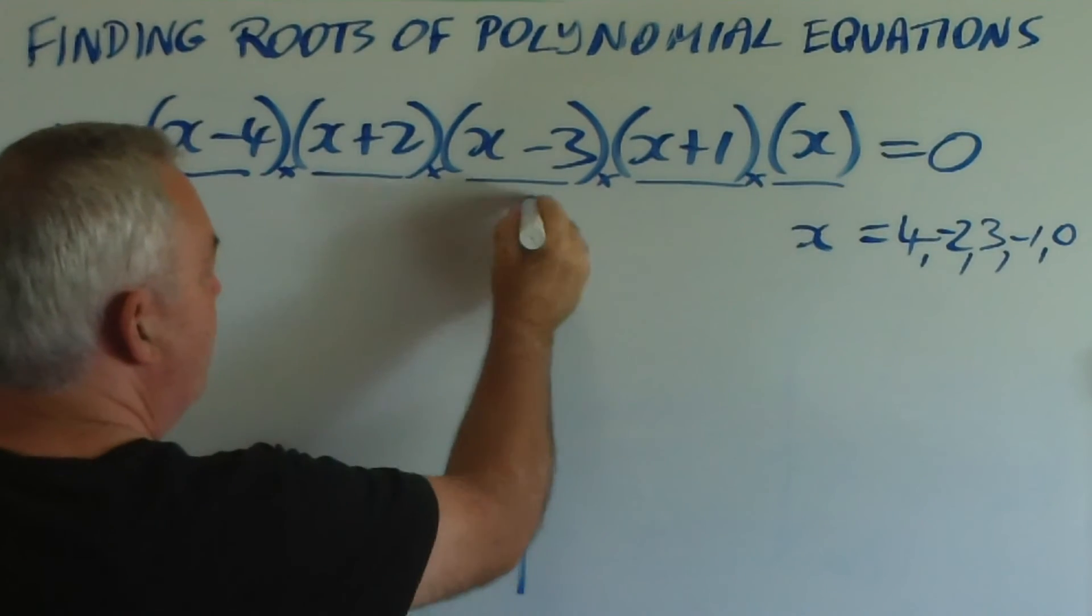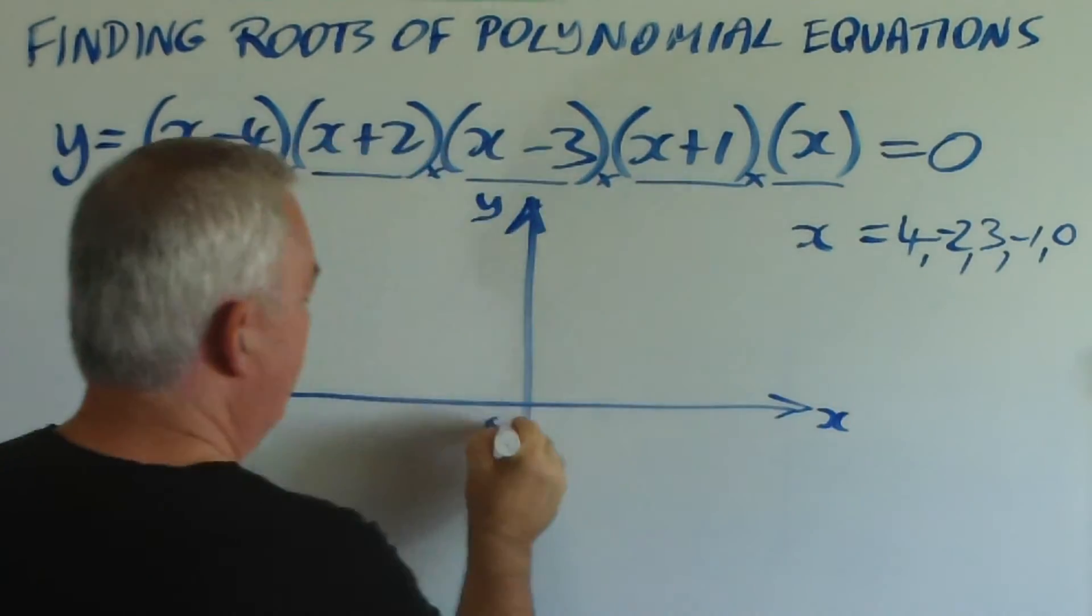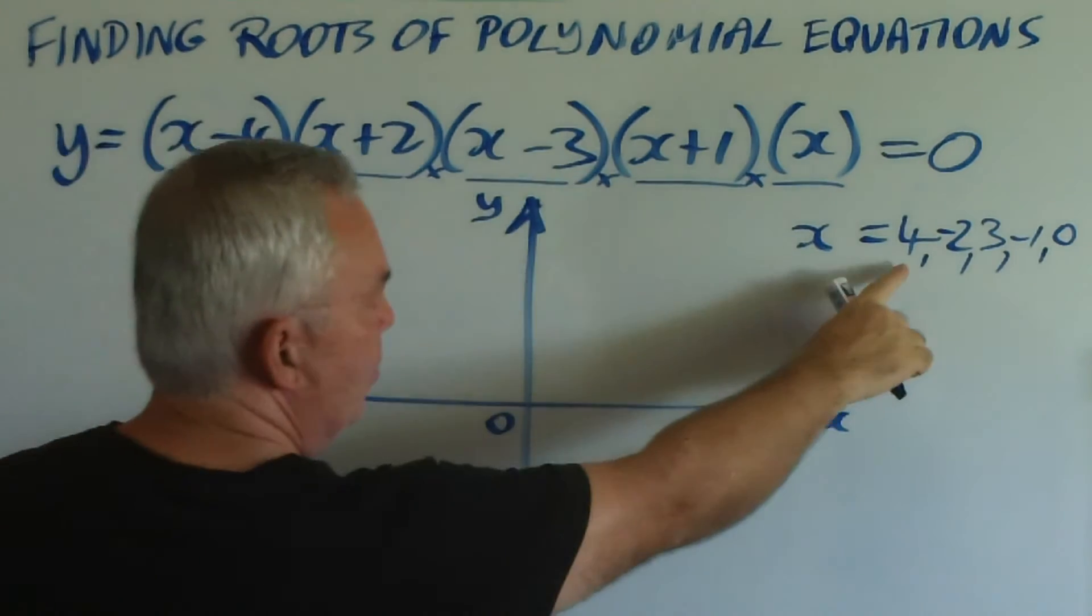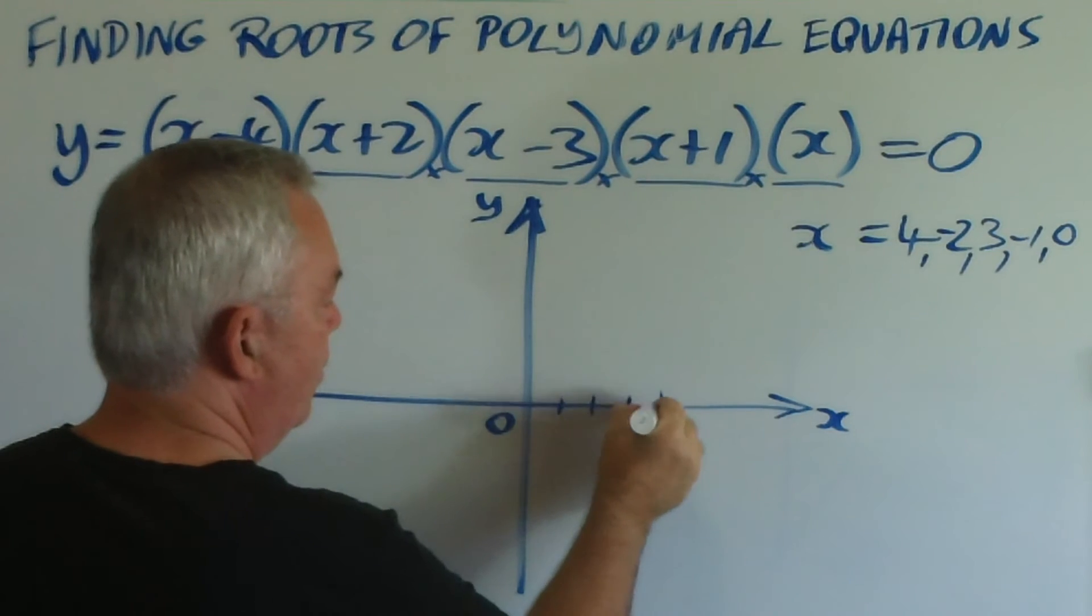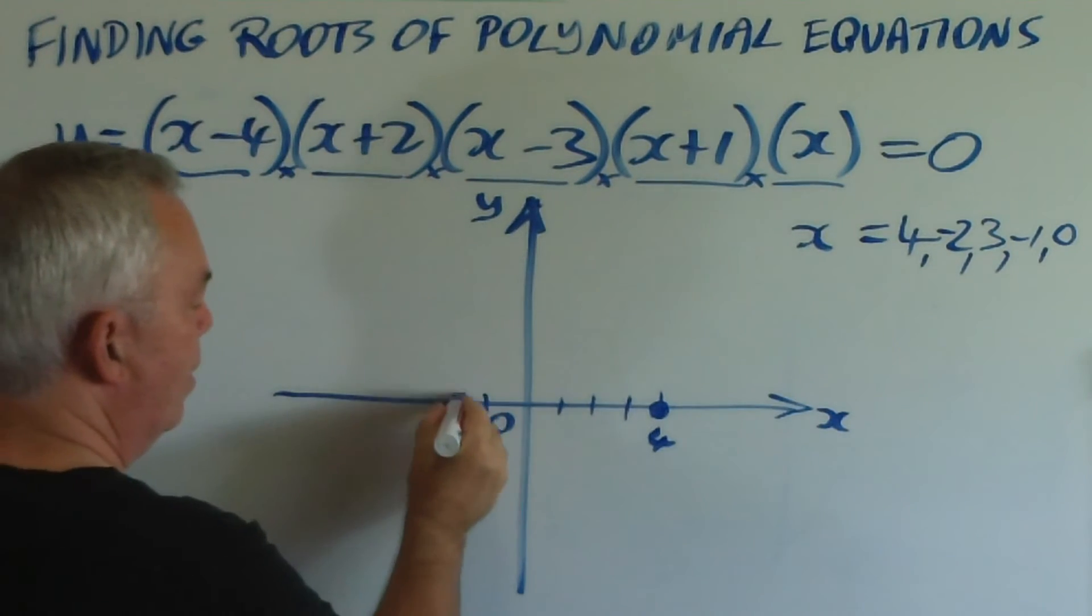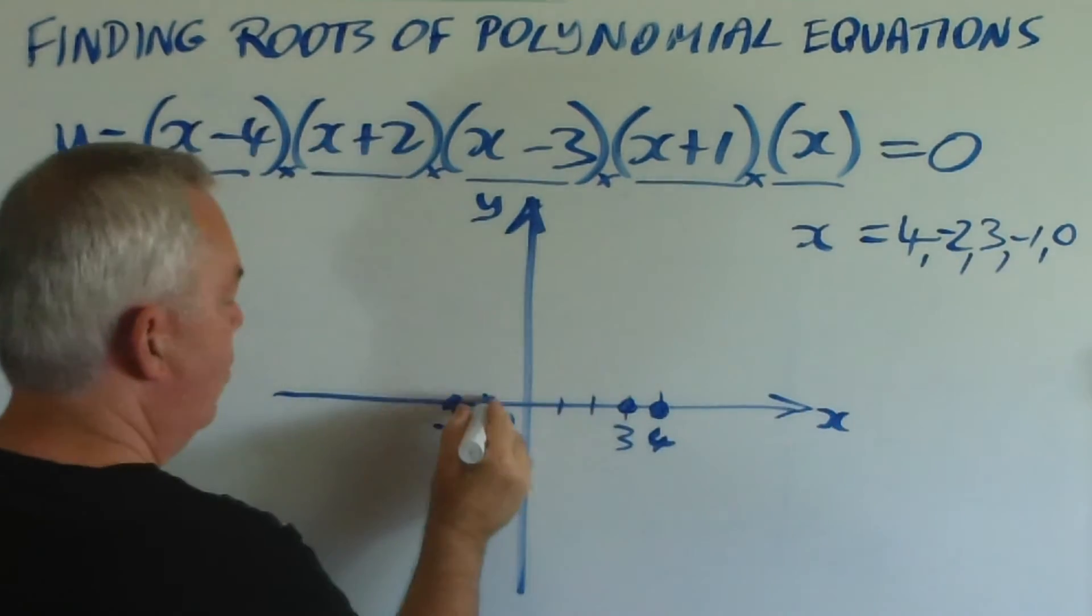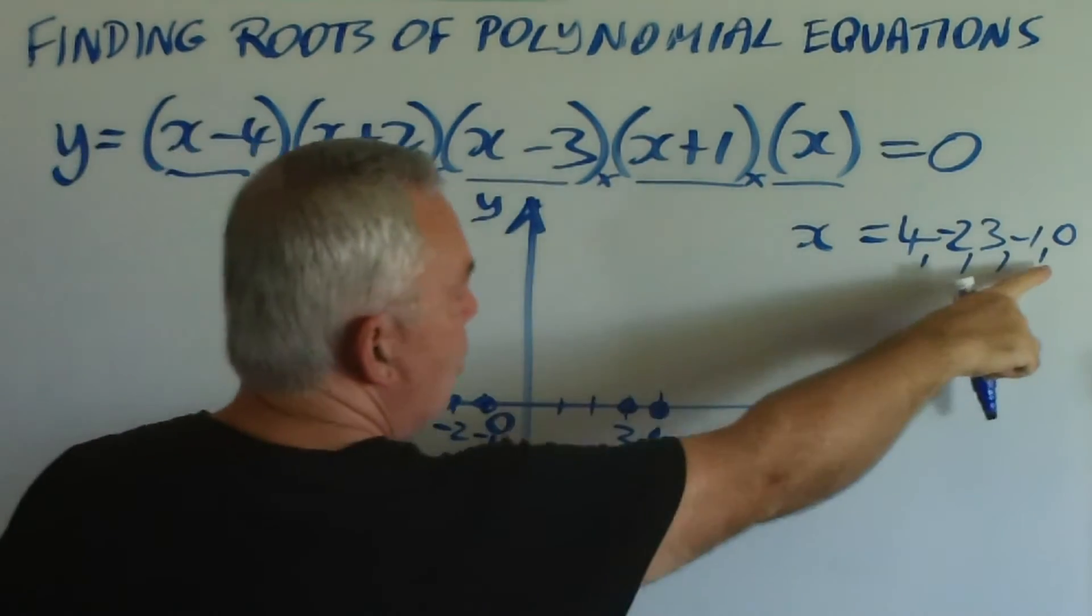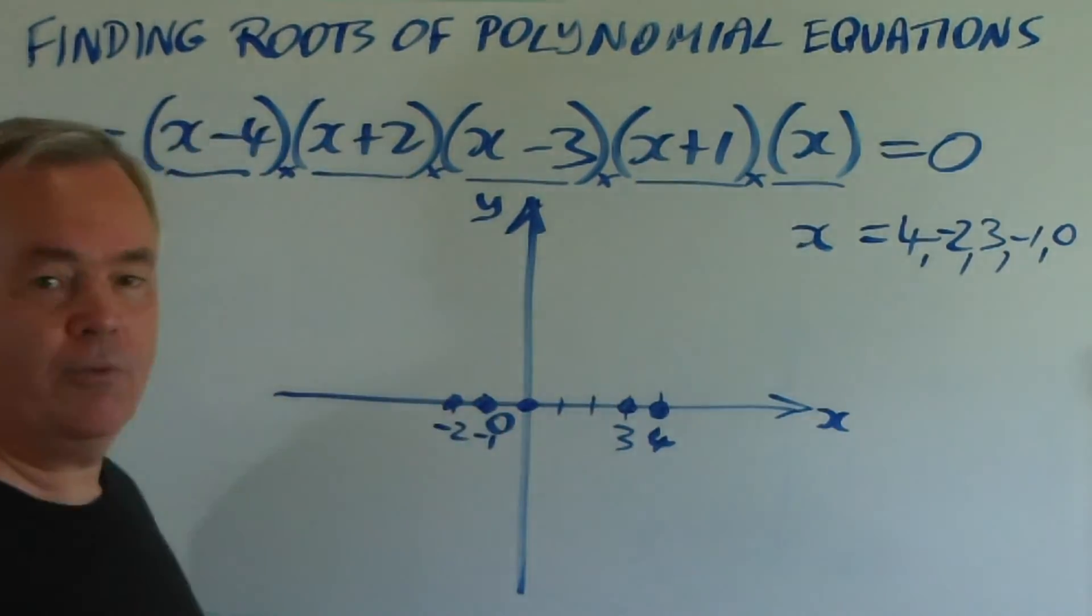And to graph it, we set up our very simple graph paper, and we plot the roots. There's one at four, there's one at negative two, another one at plus three, another one at negative one, and one at zero. There are our five roots.